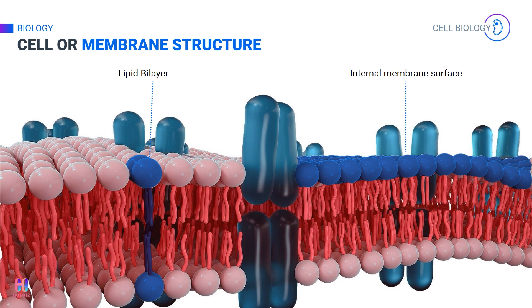In the bilayer, numerous proteins are present. Some of the proteins can float around in it, just like icebergs float in a sea, while some are firmly embedded in it.